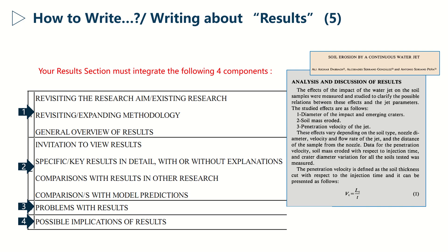In the first component, the thing to do is to revisit the research objectives. This is what the author did here in yellow. After that, you should expand the methodology. This is what was done here in green. Then you should present a general overview of the results. This is what they did here in red.